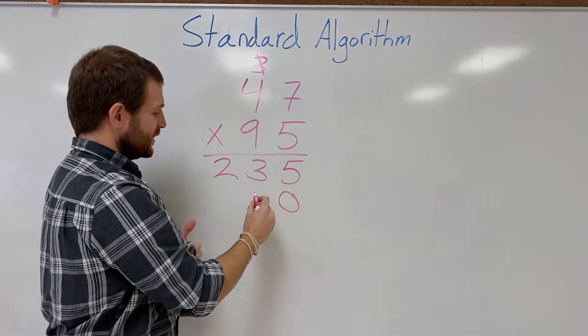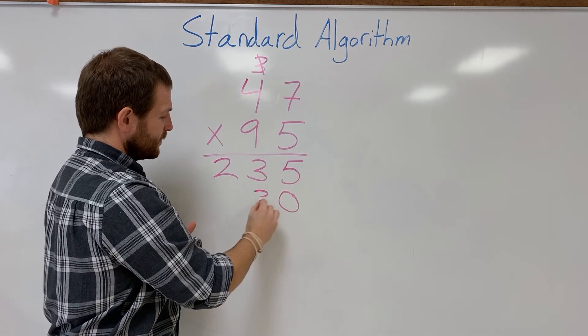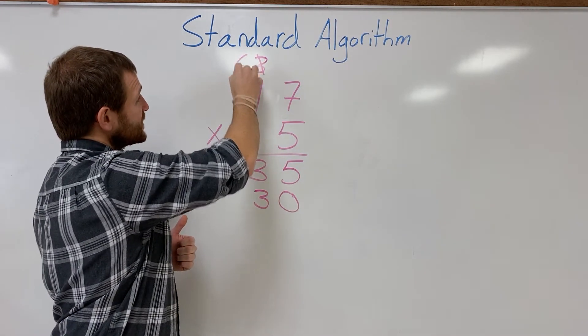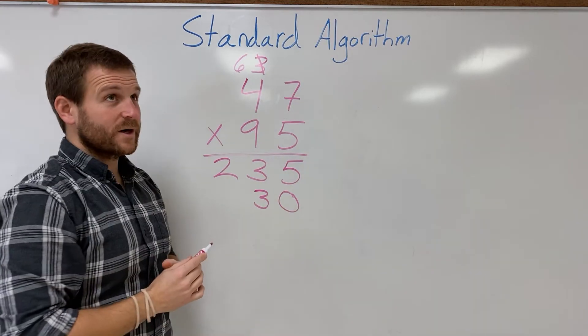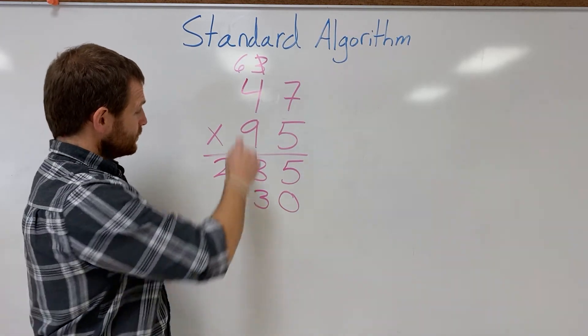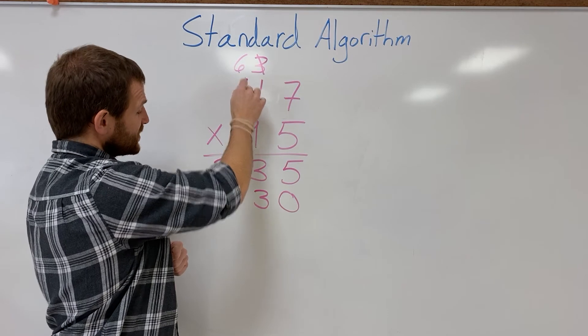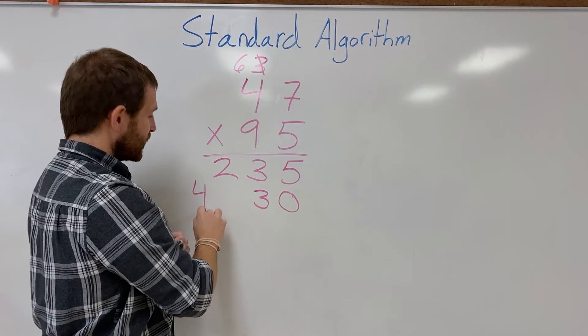9 times 7 is gonna give me 63. Carry my 6. 9 times 4 is gonna give me 36. Plus the 6 up there will give me 42.